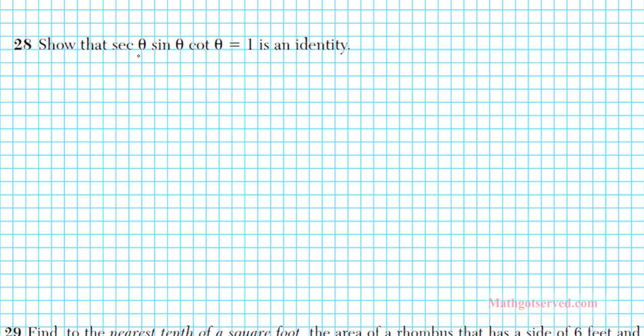Let's take a look at problem number 28. This is a problem involving identities. It says show that sec θ sin θ cot θ equals 1 is an identity. So how do we show that the left side is equal to the right side? One good strategy to use is to express every single trig function as a parent trig function, which are sine and cosine. All other trig functions depend on the combination of one or both of them.